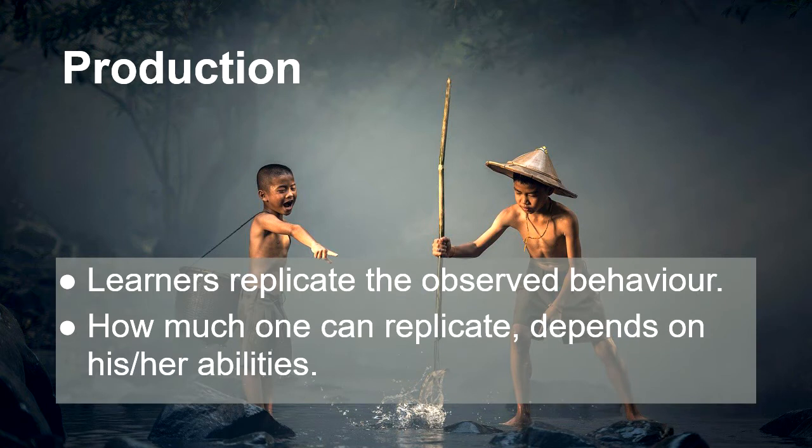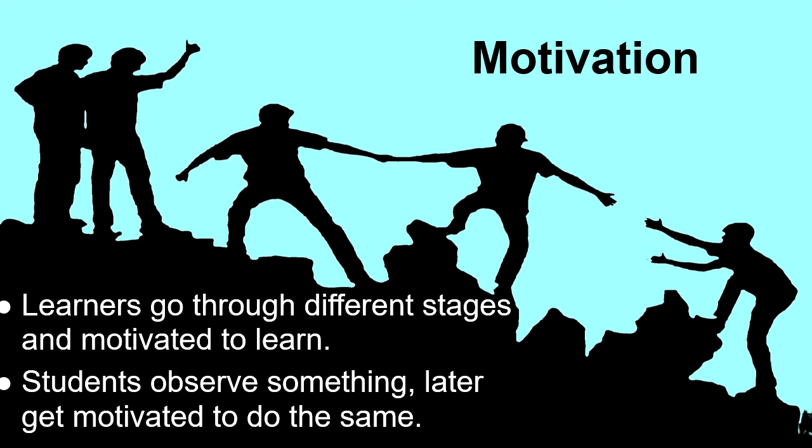The third condition is production — learners replicate the observed behavior. For example, if one child is fishing and another observes, the second child also replicates the same behavior. How much one can replicate depends on their abilities and skills. In sports, when students try to replicate observed skills, it depends on whether that particular student has the abilities to do so. Replication involves skills and abilities.